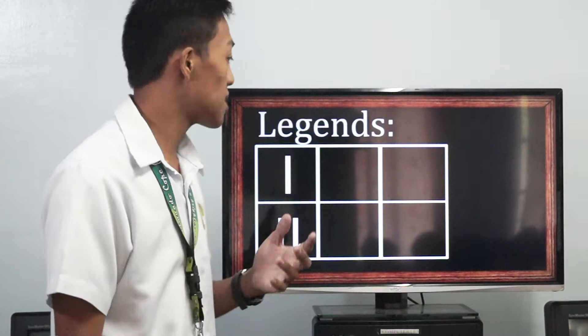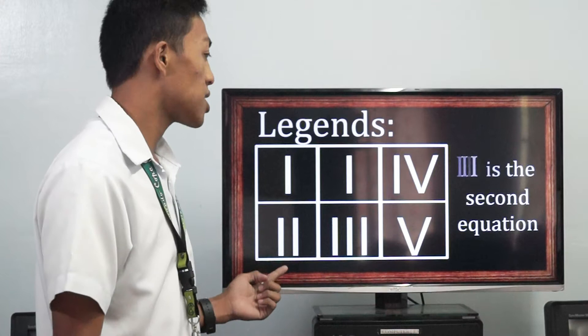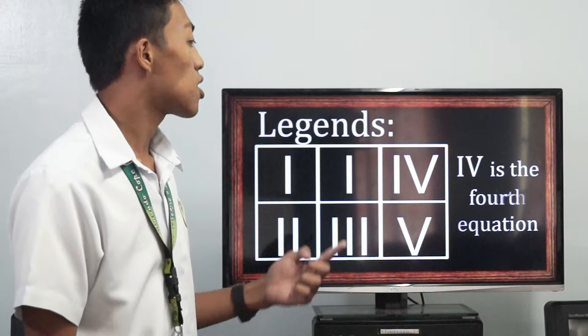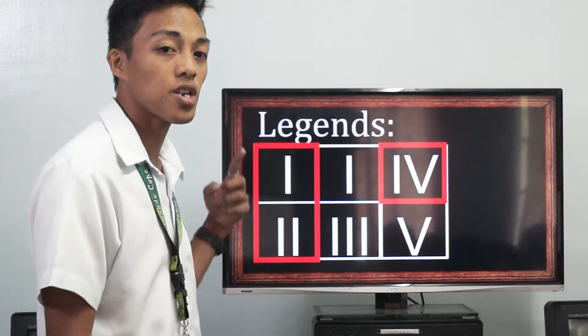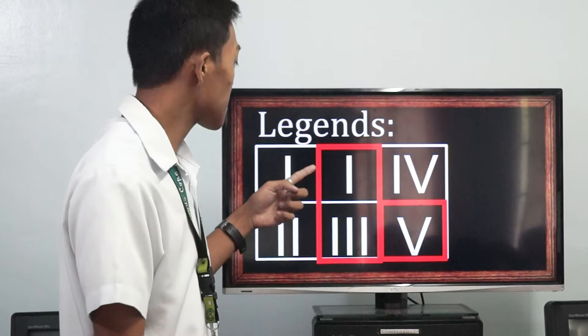Let's use these legends to find x, y, and z. Roman numeral I is the first equation, Roman numeral II is the second equation, Roman numeral III is the third equation, Roman numeral IV is the fourth equation, and Roman numeral V is the fifth equation. To find the fourth equation, let's eliminate x from the first and second equations. To find the fifth equation, let's eliminate x from the first and third equations. And to find z, let's eliminate y from the fourth and fifth equations.